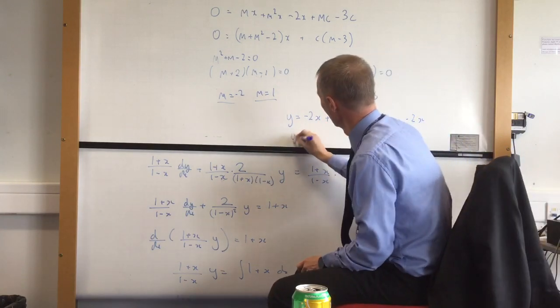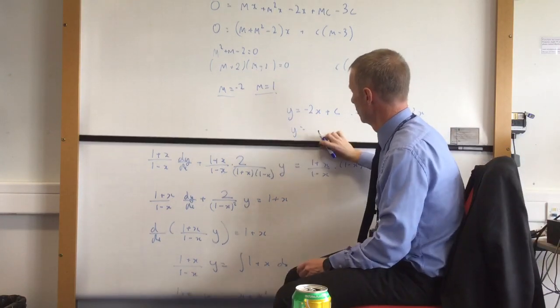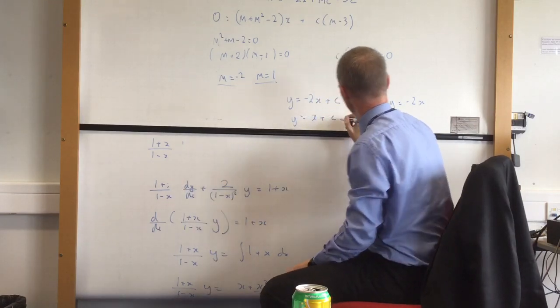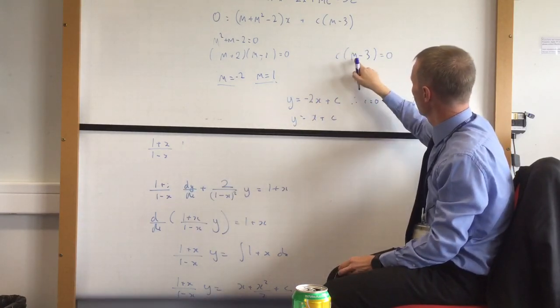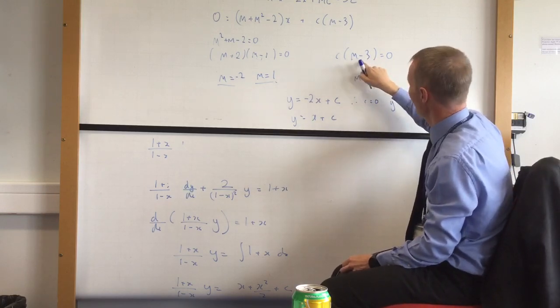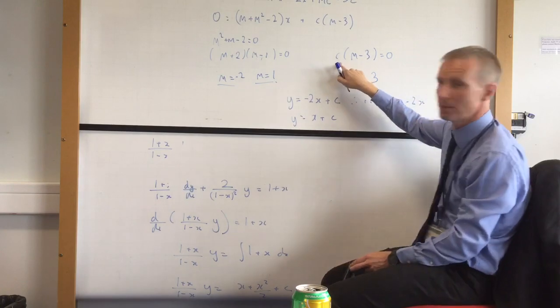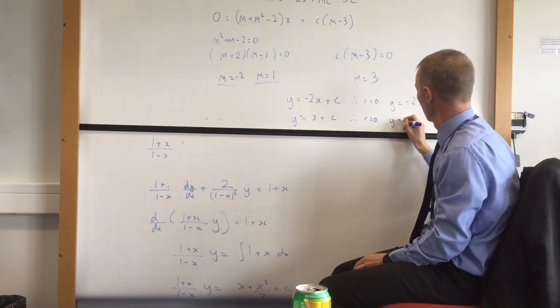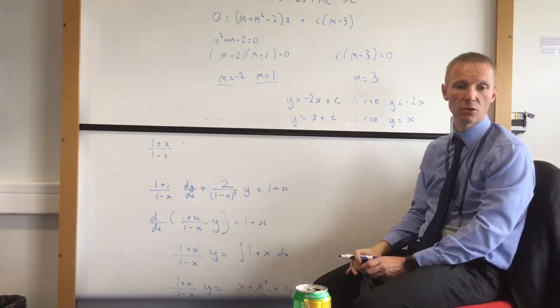The other one, y equals, that comes from the 1, so y equals x plus c. But if m is 1, then that bit's not 0, which means I've got to have it to be 0, which means again c must be 0. So the other one, so therefore c must be 0, so y equals x is the other one.